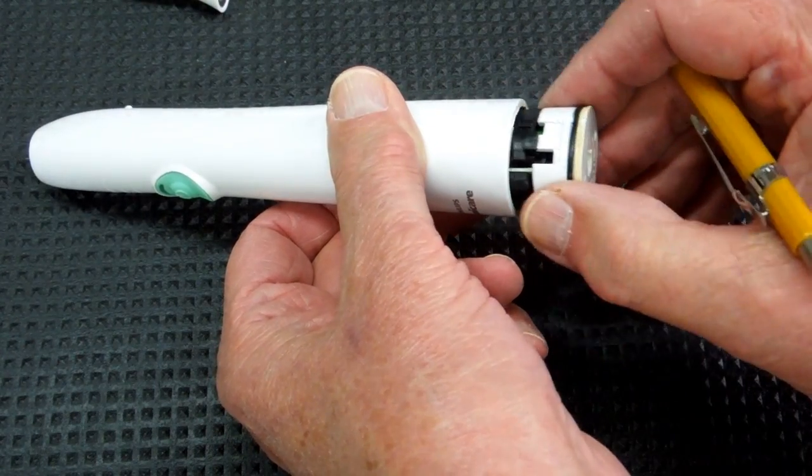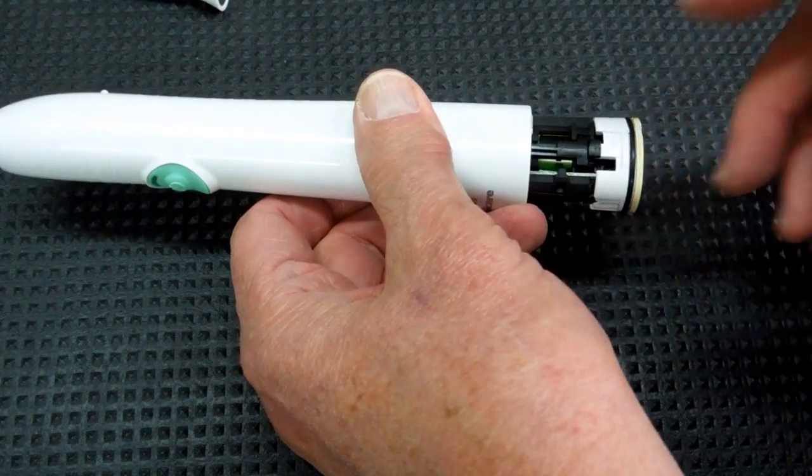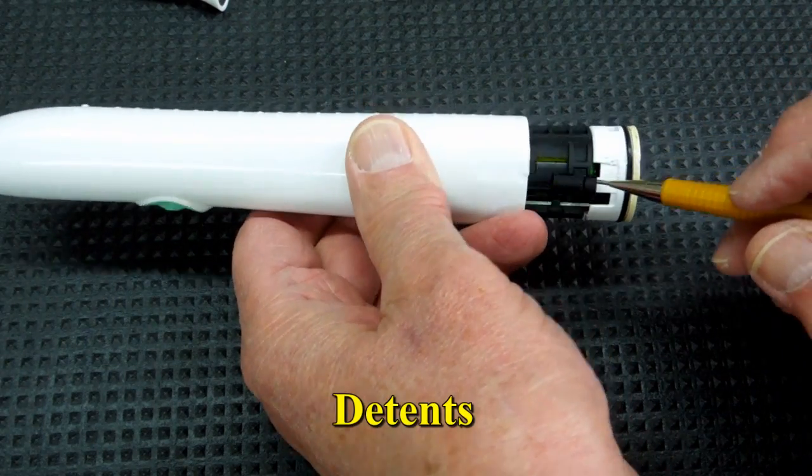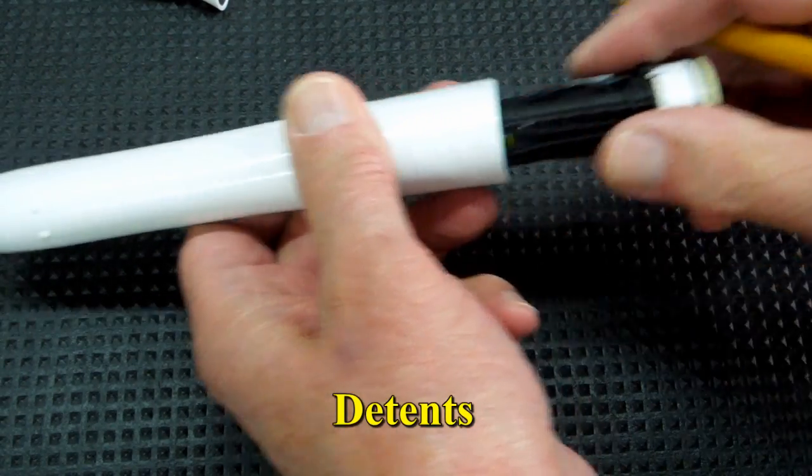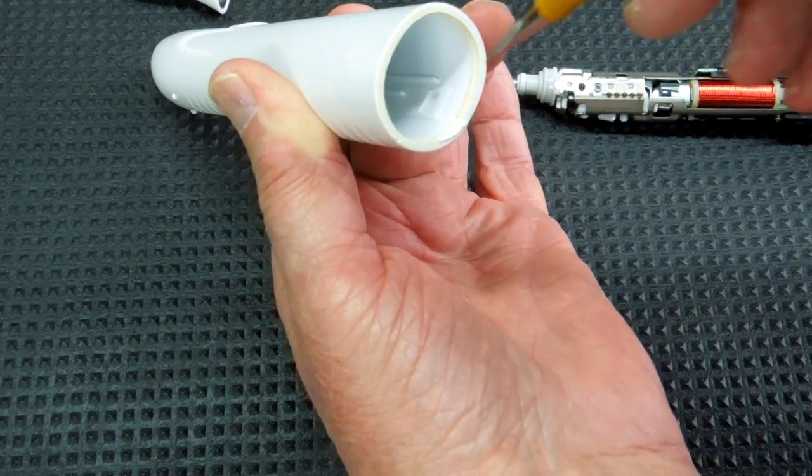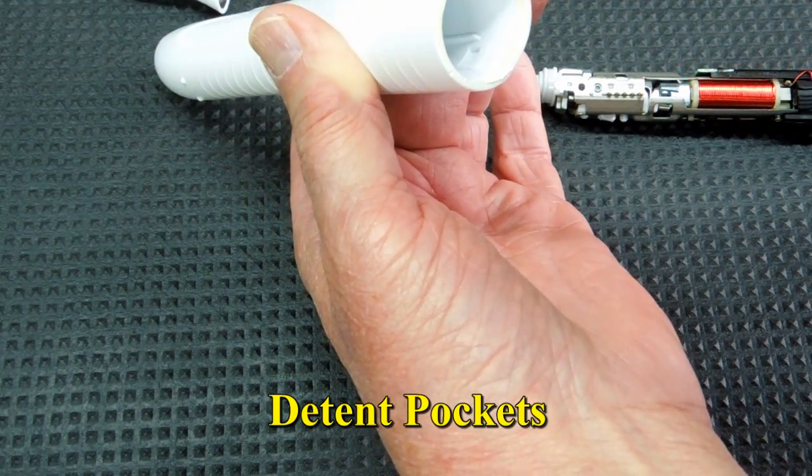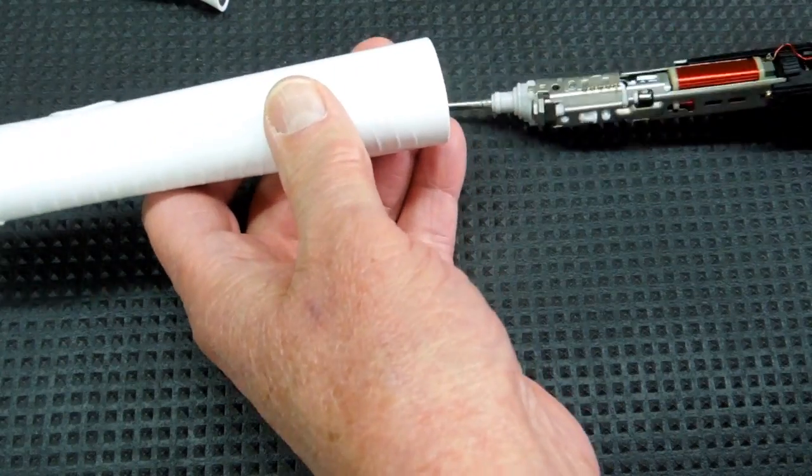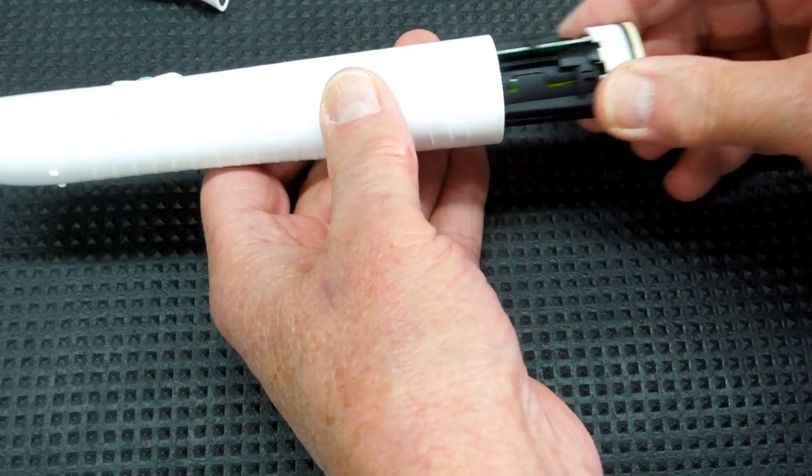Placing a screwdriver in here and prying this out, there's two catches here and here, and they engage with some slots on both sides of this. Once that's released, you pull this out.